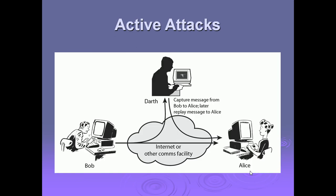This is the diagram of active attacks, in which Bob and Alice are communicating with each other over the internet or another communication channel. There is an attacker that captures the message from Bob to Alice and then replays that message from Bob to Alice.